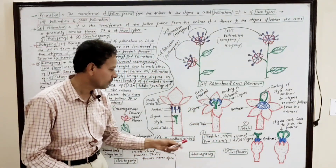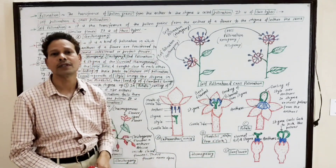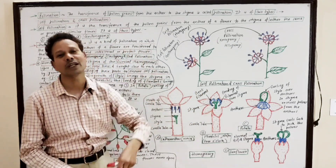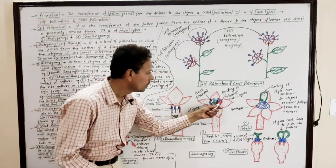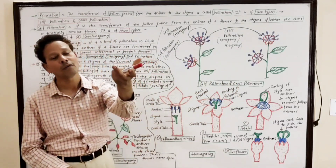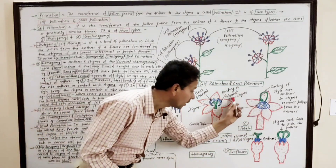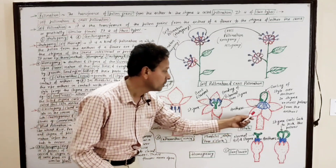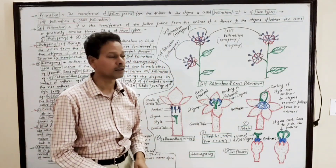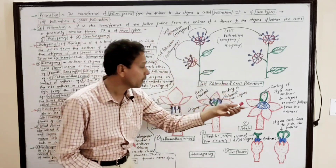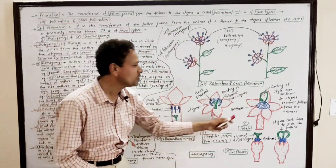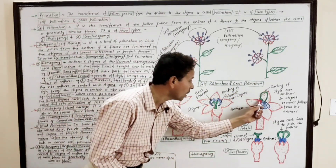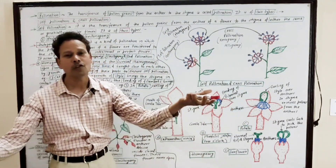A second example is Mirabilis jalapa, the four o'clock plant, where both stigma and anthers come close to each other due to the bending of the filament of the male sex organ. Another example is potato, in which the stigma comes into contact with a group of mature anthers due to the curling and bending of the style, allowing the stigma to receive the pollen grains.